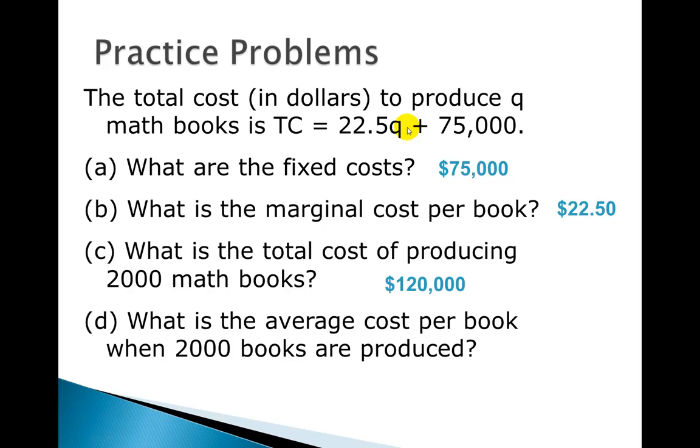Then the next question is, what's the average cost per book when we produce 2,000? Well, average cost is total cost divided by the quantity. So cost over quantity, that's your average cost. And so we've got a total cost of 120,000, we divide that by 2,000, and we get an average cost of $60 per book.